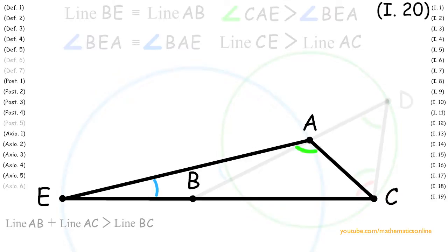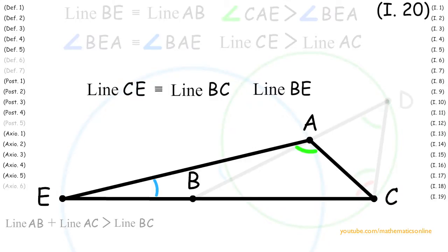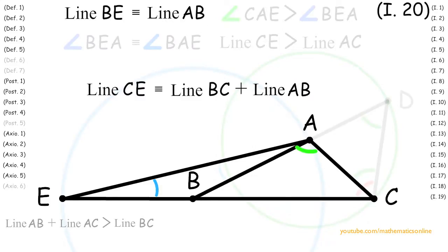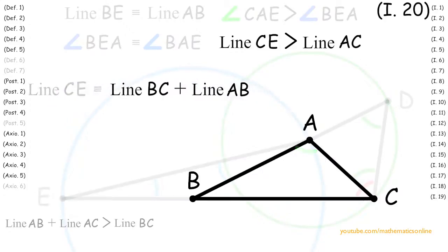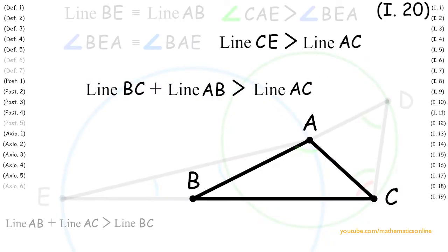So looking at line CE, we can see that it is congruent to the sum of line BC plus line BE. Since line BE is congruent to line AB, then line CE is also congruent to the sum of line BC plus line AB. Since we also have that line CE is greater than line AC, then line BC plus line AB is greater than line AC.